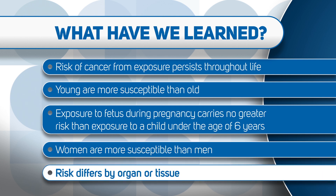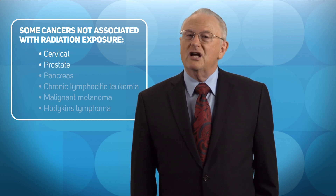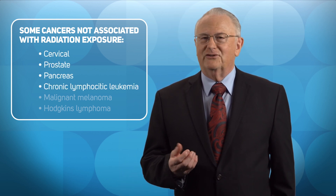Risk of developing cancer later in life — the probability that cancer might occur — differs by organ or tissue. The bone marrow is very sensitive, and leukemia might develop. The rectum and other tissues are very insensitive, and cancer risk is rarely, if ever, elevated following exposure. Perhaps surprisingly, some sites have not been convincingly or consistently linked to radiation exposure: cancer of the cervix, the prostate, the pancreas, chronic lymphocytic leukemia, malignant melanoma, and Hodgkin's lymphoma, for example, despite 100 years of epidemiologic studies. An interesting biological question is why this might be so.